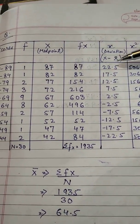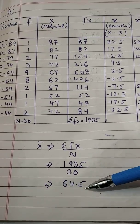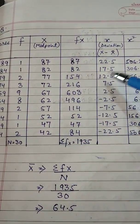Or yeh joh X bar hai, yeh aapka yeh calculate. I mean this is 64.5. Toh aap yahaan par dekhiye. 87 minus 64.5, yeh aagya.